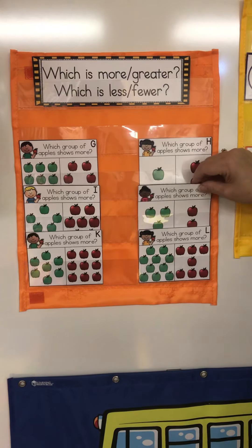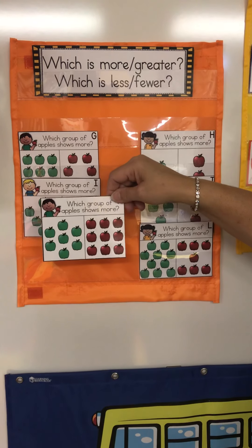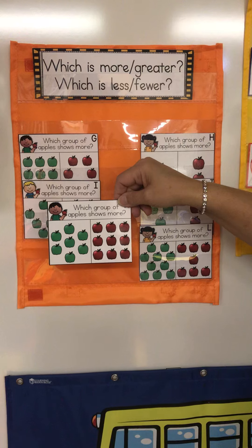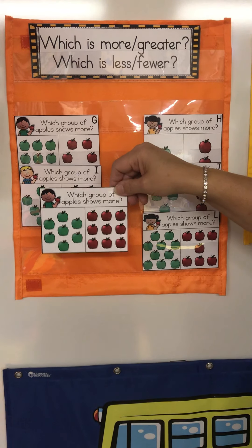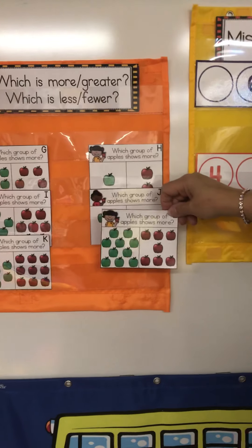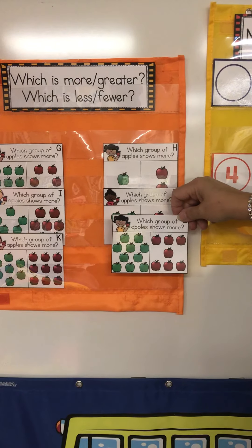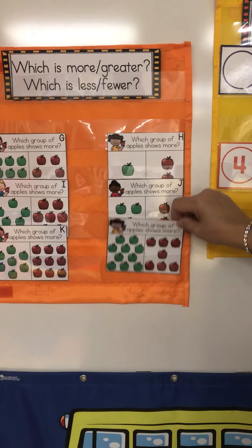Did you know there's another word for less and it's fewer? Which group is fewer? Fewer means less. Green has less. Which group has fewer? Fewer means less. Red has less.